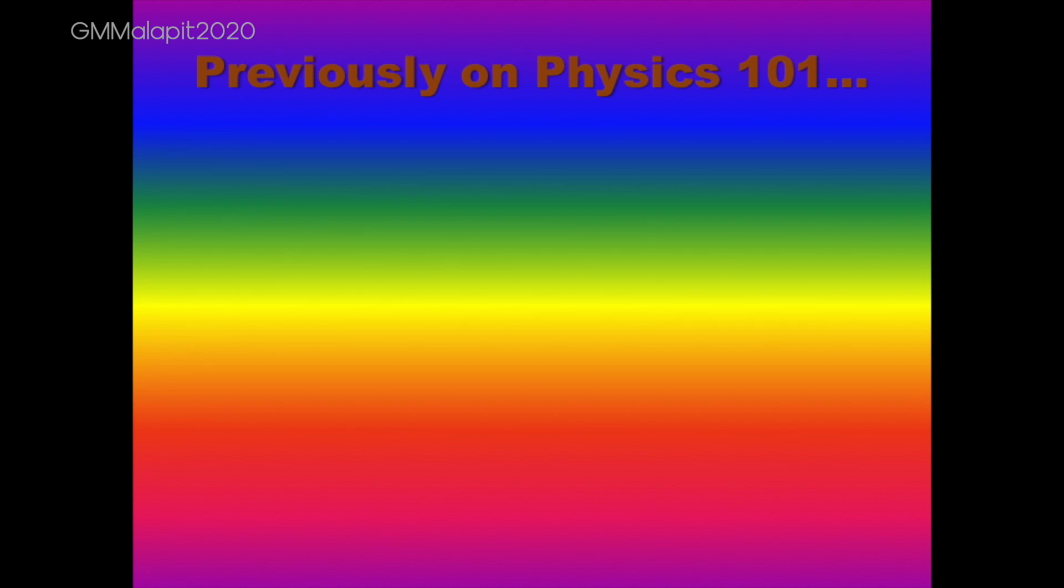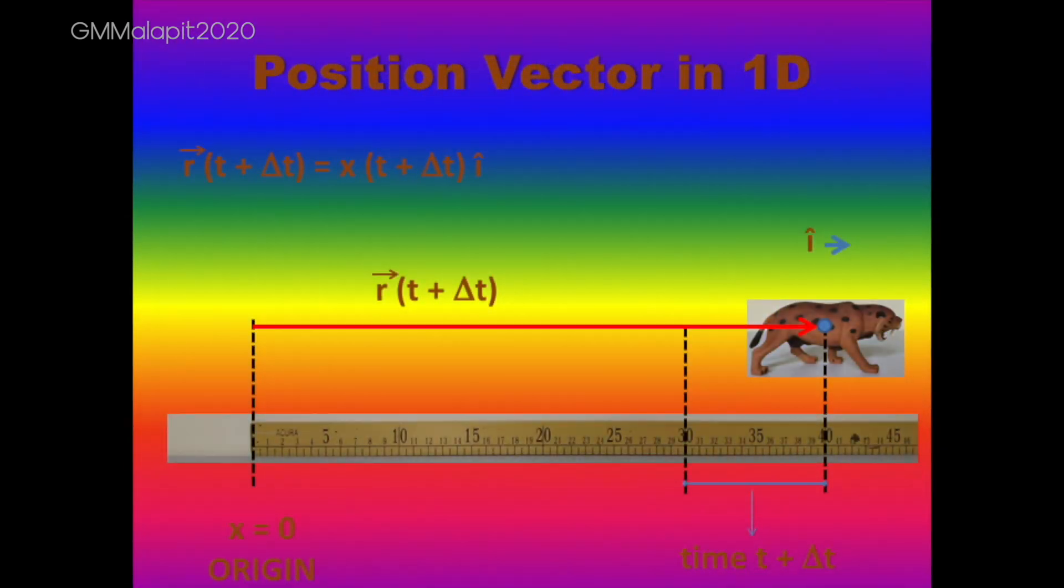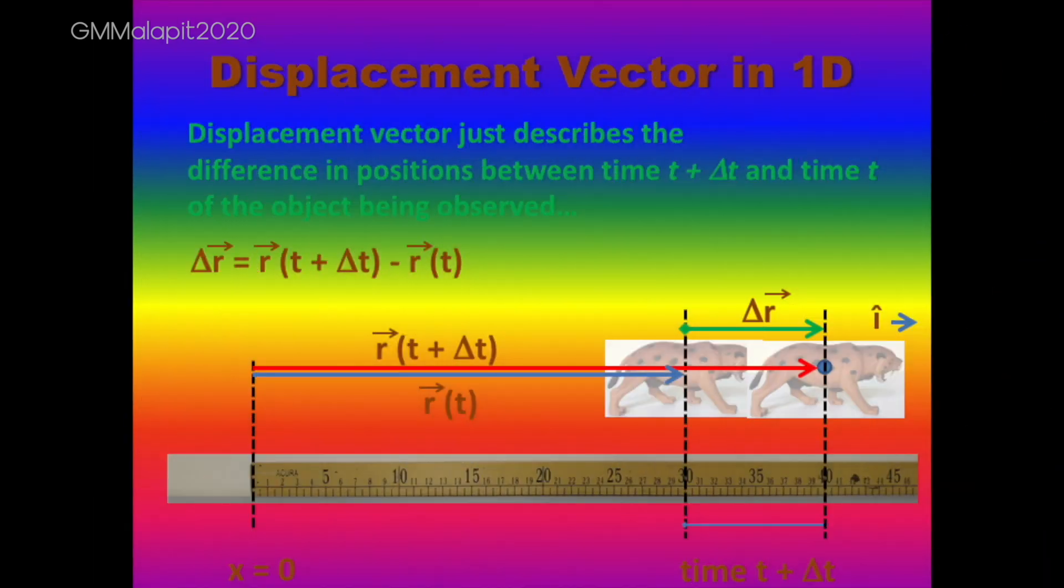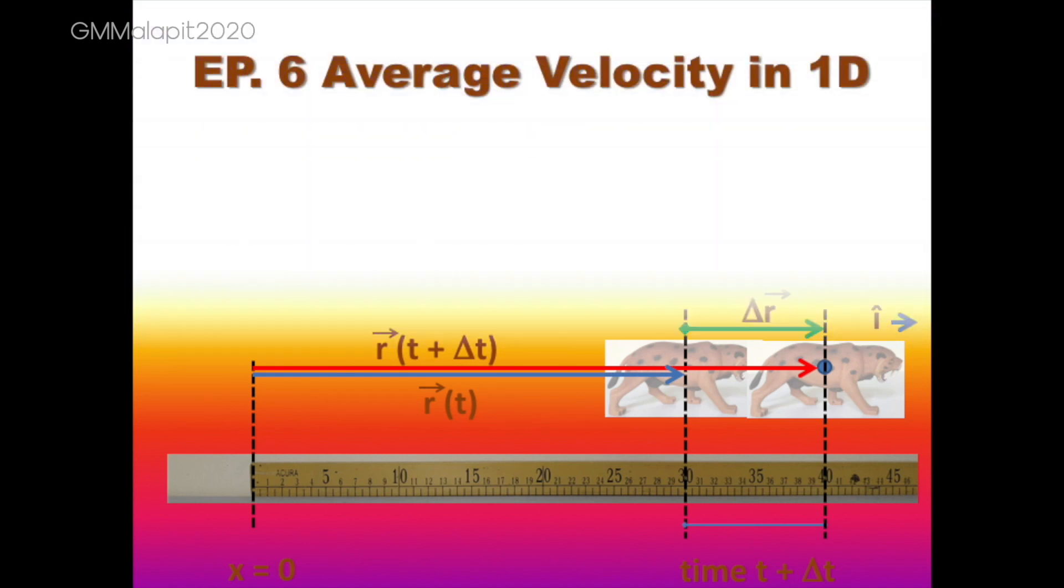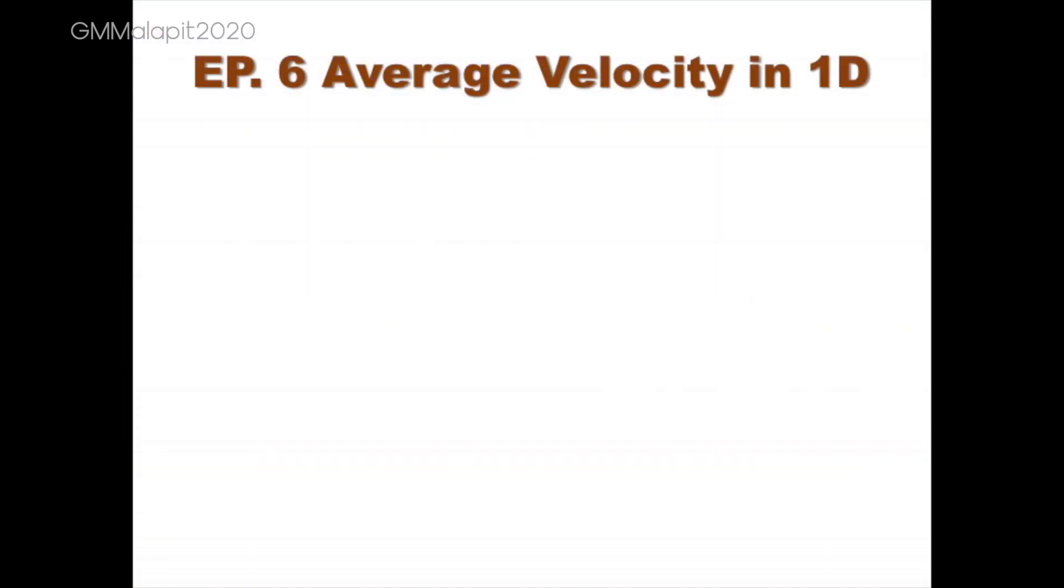Previously on Physics 101: Position Vector in 1 Dimension, Displacement Vector in 1 Dimension, Average Velocity in 1 Dimension.